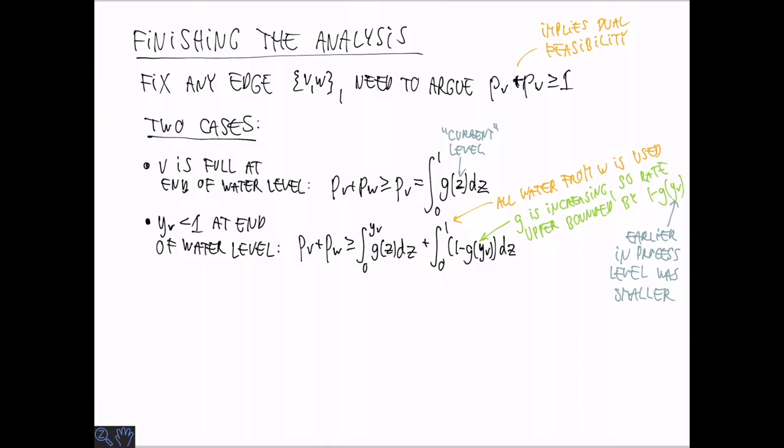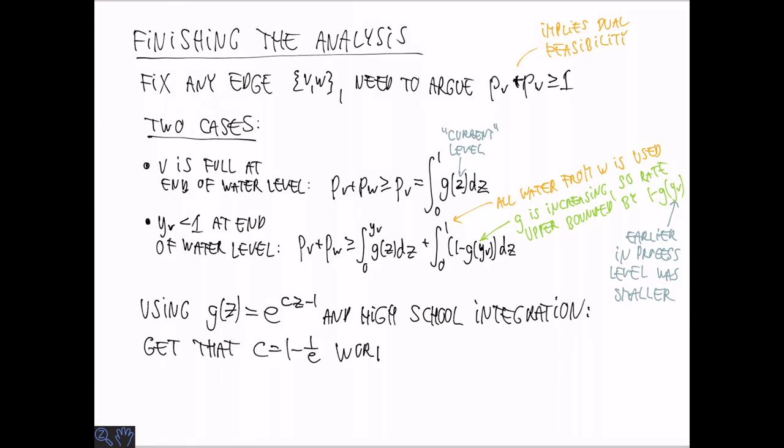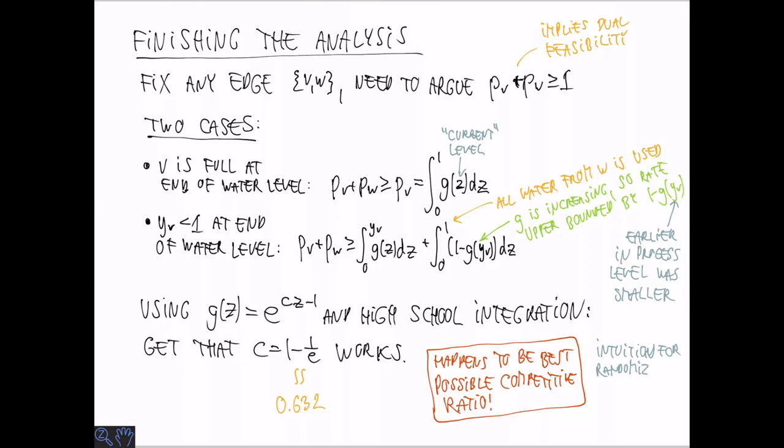And now we can insert the guess from before of G of Z, e to the CZ minus 1 and a bunch of computations essentially high school integration tells us that the choice of C which is 1 minus 1 over e actually works. And an amazing thing is that this happens to actually be the best competitive ratio so there are lower bounds also that show that it's not possible to do anything better than 1 minus 1 over e. In the randomized case it's possible to do something that is analogous where essentially these fractional matchings correspond roughly to probability distributions over choices of edges.